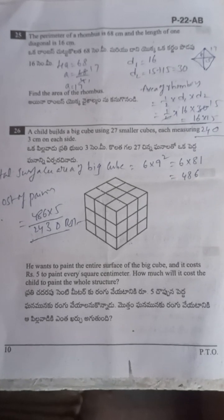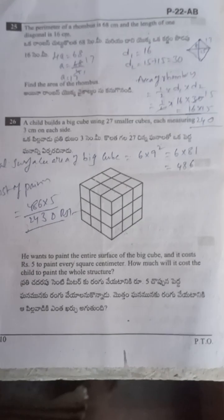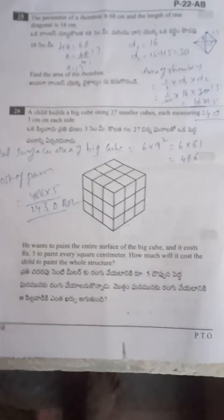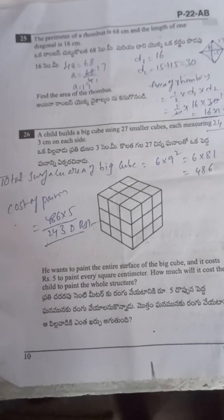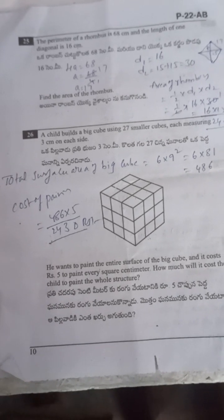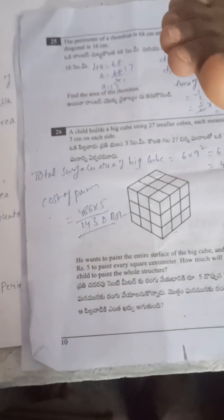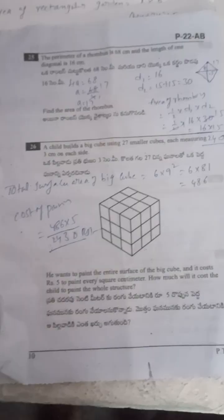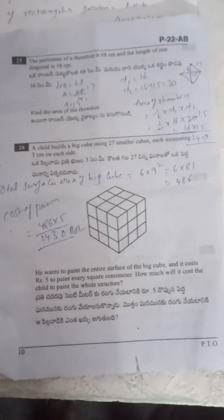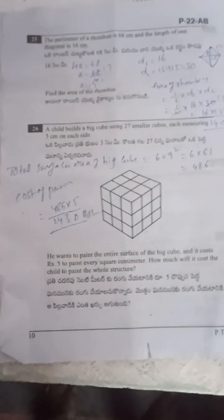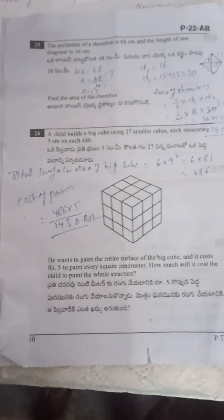Next: a child builds a big cube using 27 smaller cubes, each measuring 3 cm on each side. The side of the big cube equals 3 plus 3 plus 3 equals 9 cm. Total surface area of cube equals 6a squared equals 6 into 9 squared equals 6 into 81 equals 486 cm squared. Cost of painting the big cube at a rate of 5 per cm squared equals 486 into 5 equals 2430.